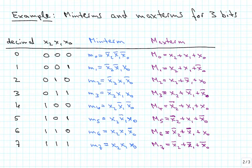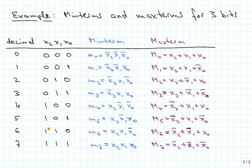Here we are looking at an example for min terms and max terms for 3 bits. We start by writing down the 3 bits x2, x1, x0, and we just count up in binary: 0 0 0, 0 0 1, 0 1 0, 0 1 1, and so on up to 1 1 1. In decimal we are counting 0, 1, 2, 3, up to 7.